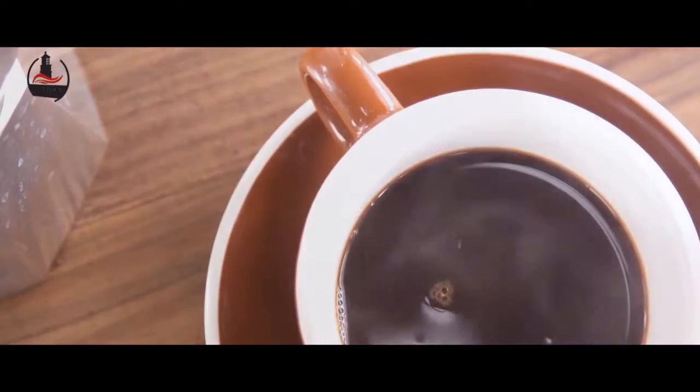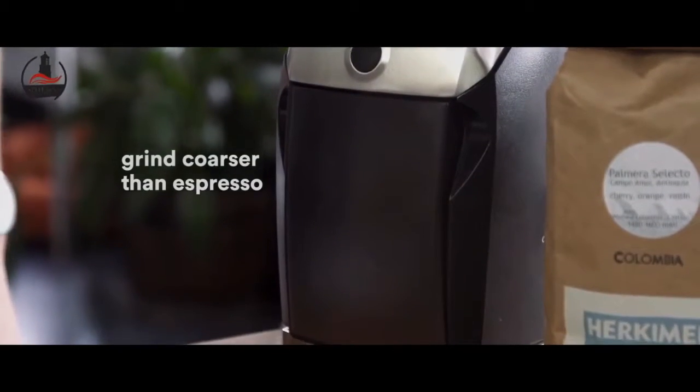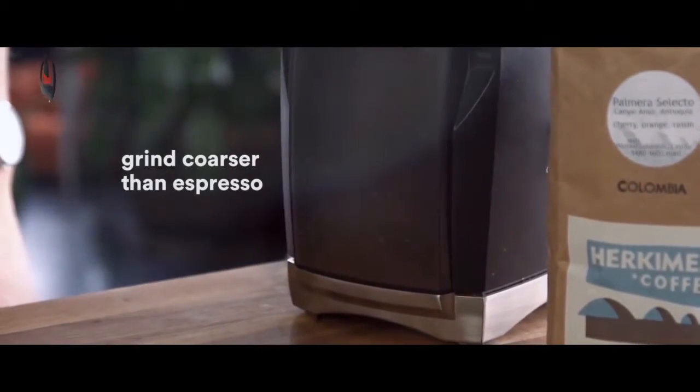Okay, first things first, as with all the brewing techniques, grind size is pretty important. And actually this is where most people make the first mistake and produce a lot of bitterness. We don't want it ground like we would for an espresso machine, which is super fine, like table salt. We want to go just a little bit coarser.